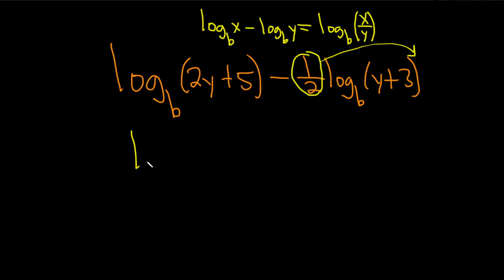So let's go ahead and rewrite this one. So log base b of 2y plus 5 minus log base b of y plus 3. And we're bringing up that one-half, so it comes up here like this.